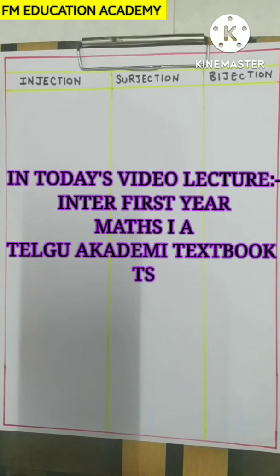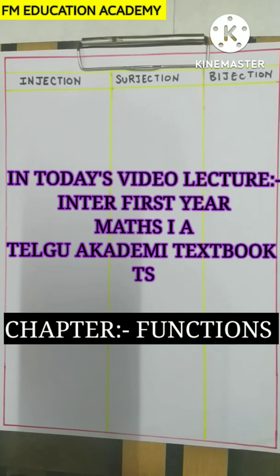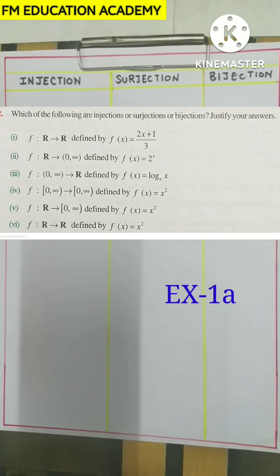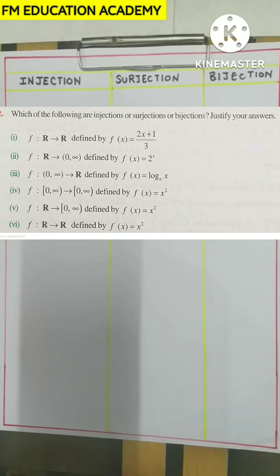In today's video lecture, we will be discussing a question from the chapter Functions from class 11, first year 1A. The question is the 2nd question from exercise 1A: which of the following are injections, surjections, or bijections? Justify your answer. First part: f is a mapping from R to R defined by f(x) = (2x + 1) / 3.